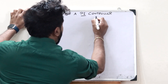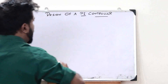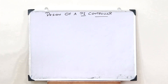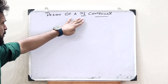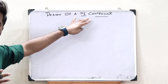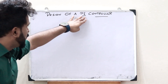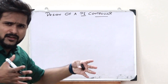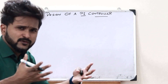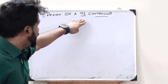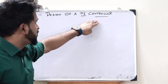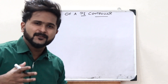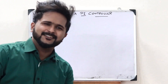A PI controller, or a proportional integral controller — as the name suggests, this kind of controller is a proportional controller and it has got something to do with integral. That is what we can deduce from the primary analysis of the name PI controller. So let's simplify that concept.